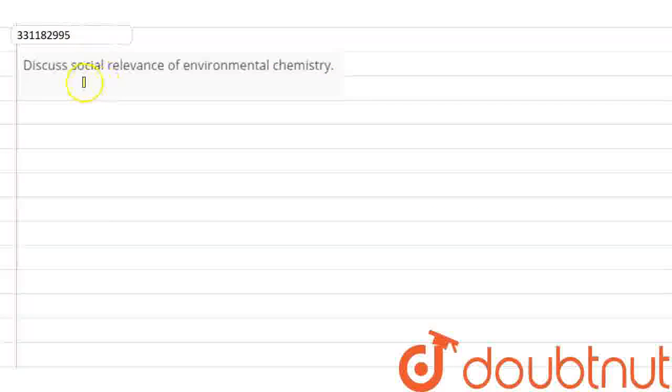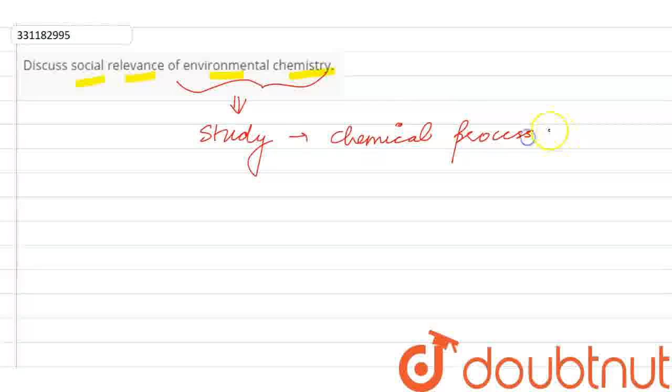Hello everyone, we have to discuss social relevance of environmental chemistry. So let's talk about environmental chemistry. This is the chemistry where we study the chemical processes in the air, in the water, in the land.